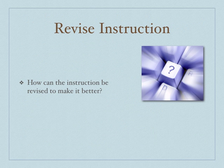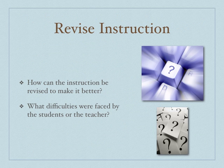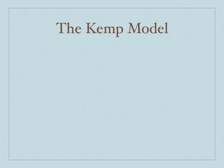Once you've administered both evaluations, you need to look at revising your instruction. You're looking at two things: how can the instruction be revised to make it better, and what difficulties were faced by the students and teacher? By identifying these two things, when you go back to rewriting your course, you'll be more effective in making the lesson better for the students the second time around.